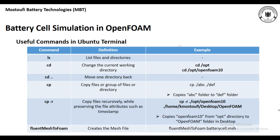The next one is `cd`, which is used to change the current working directory. For example, if you want to go to the opt directory you use `cd /opt`, or if you want to navigate further into that directory you use `cd /opt/openfoam10`. By typing this in the Ubuntu terminal you are now in the OpenFOAM 10 directory.